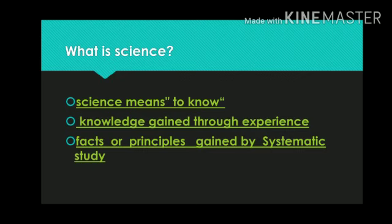There are three statements for science. Science literally means to know. Science is knowledge gained through experience. Last definition of science is, science is facts or principles gained by systematic study. I think that the definition of science is clear to you.